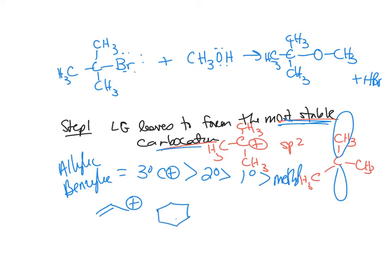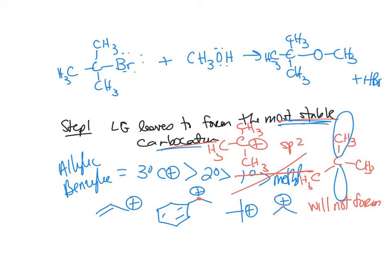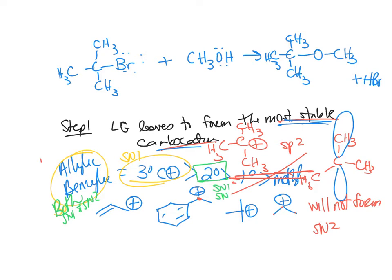An allylic carbocation has a double bond adjacent; a benzylic carbocation is at the CH position adjacent to a benzene ring; tertiary has three carbon substituents. Secondary would be bonded to two carbons. Primary and methyl will not form carbocations for the most part. Simplify your understanding: methyl and primary → think SN2; tertiary → think SN1; allylic and benzylic can do both; secondary depends on conditions.